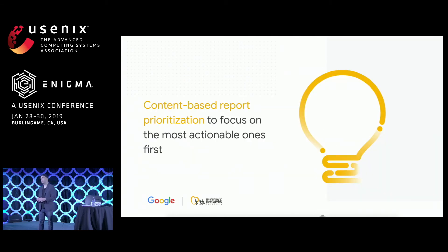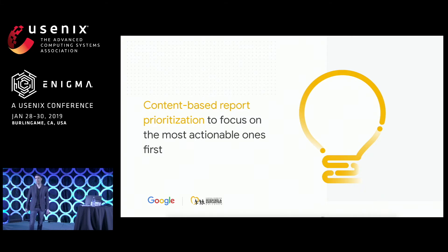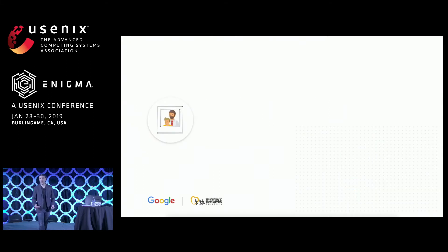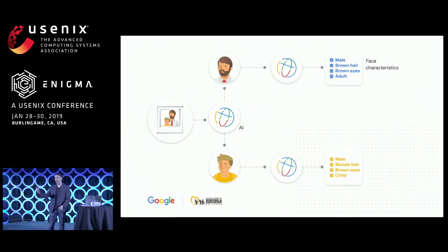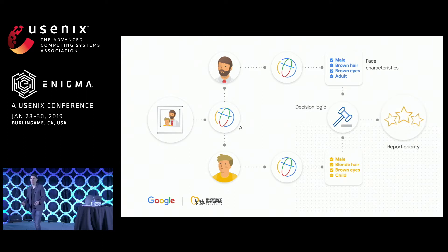What we can do is try to help them develop technology which can analyze the content and help them prioritize the most informative reports first, so we can get to the kids as fast as possible. The idea is: when we receive a piece of content as an image, we can apply AI to do face detection — not recognition — simple face extraction to determine how many faces are in the image. Then we take these faces and apply another round of AI to extract face characteristics such as gender, hair color, eye color, and whether it's an adult or a child.